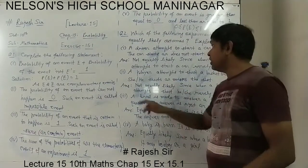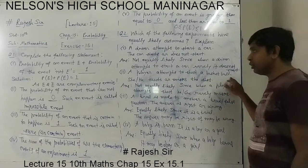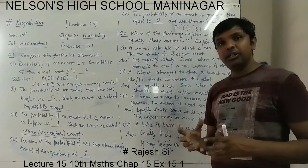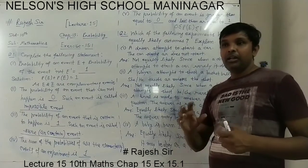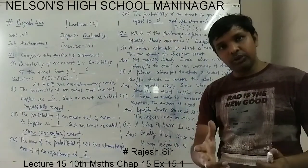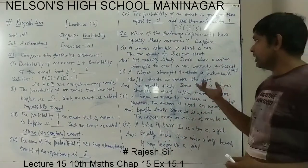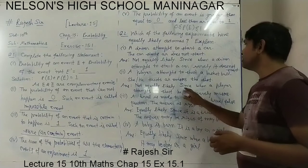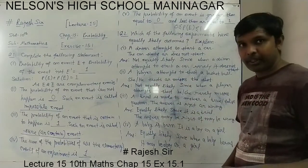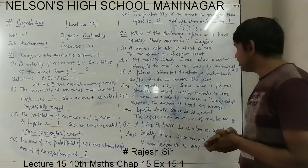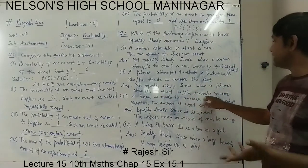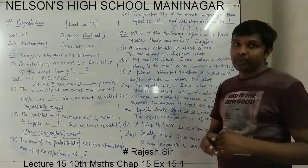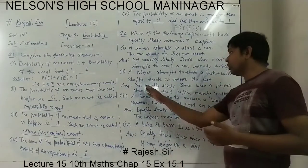Second: a player attempts to shoot a basketball — she or he shoots or misses the shot. It is again not equally likely. Since he or she is a player, when a player attempts to shoot, he or she rarely misses. The player missing will be rare and shooting will succeed many times. So it is not equally likely.